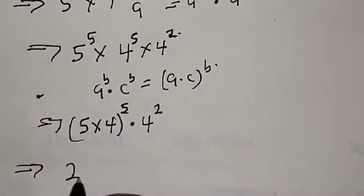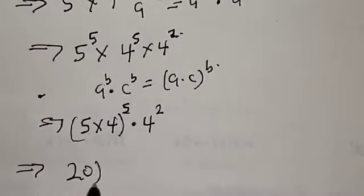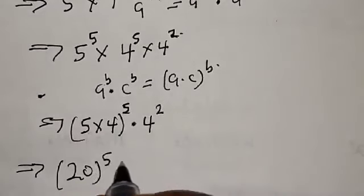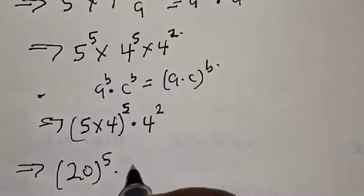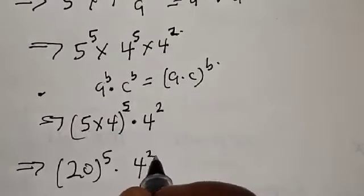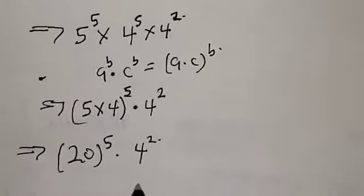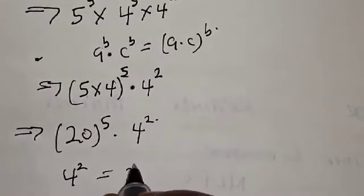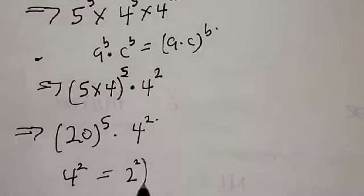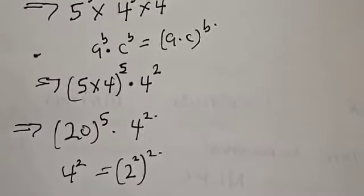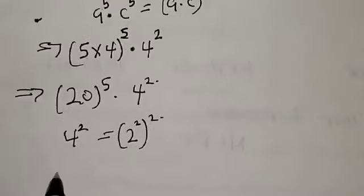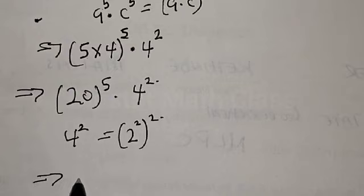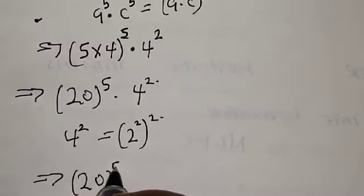This implies that 5 times 4 is 20, so we have 20 raised to power 5 multiplied by 4 squared. And 4 squared can be expressed as 2 raised to power 2, squared, which implies we have 20 raised to power 5.